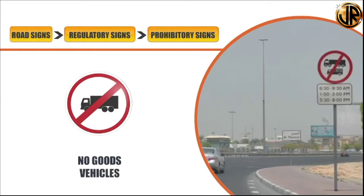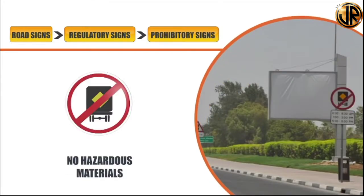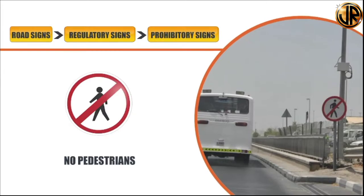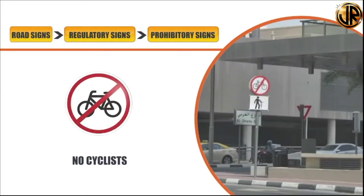The 'no goods vehicles' sign indicates that the entry of heavy vehicles is not allowed — seen at tunnels, bridges, parking areas and on freeways with timing or lane restrictions. The 'no hazardous material' sign illustrates that any vehicle carrying hazardous material is not allowed to use that road; the yellow diamond symbol is commonly used to alert about hazardous material, and these signs may be found at tunnels and freeways with a qualification plate. The 'no pedestrian' sign shows that pedestrians are not allowed to walk through the road or zone; it can be seen at tunnels, bridges, cycling tracks, freeways and near tram tracks. The 'no cyclist' sign indicates cyclists are not allowed to ride in that particular zone and is similarly found at tunnels, bridges, walking tracks, freeways and near tram tracks.